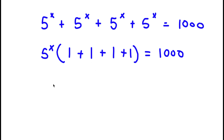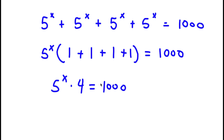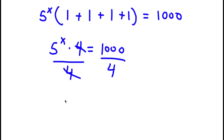If I simplify what's in the parentheses, I get 4. So now I have 5 to the power of x times 4 is equal to 1,000. If I divide by 4 on both sides, these two cancel out, and I'll be left with 5 to the power of x is equal to 1,000 divided by 4, which is 250.